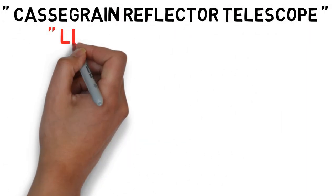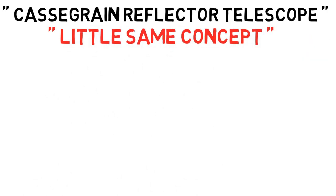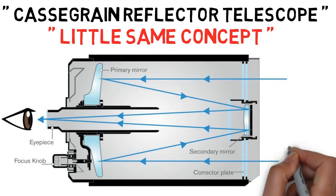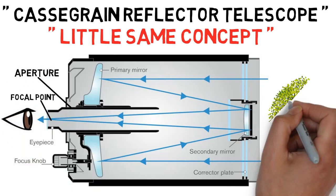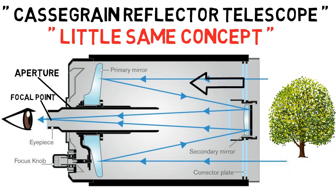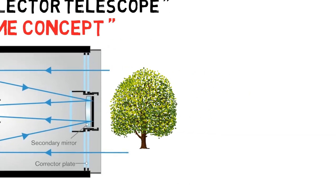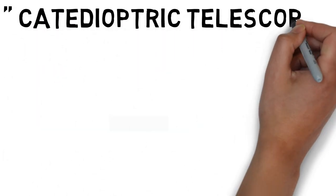Cassegrain reflector telescope. The Cassegrain reflector telescope uses pretty much the same concept as the Newtonian reflector telescope, but this telescope has an aperture in the primary mirror or objective. In the image, as you can see, the rays from the outside reflect at the objective or primary mirror, and then the rays are directed towards the small mirror, which again reflects the rays towards the aperture. The rays pass through the aperture, create a focal point, and then reach the eyepiece lens.